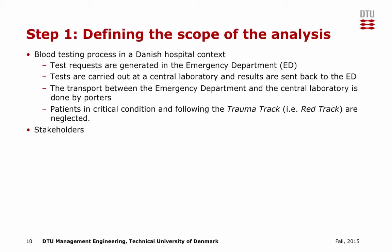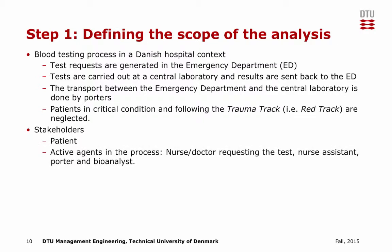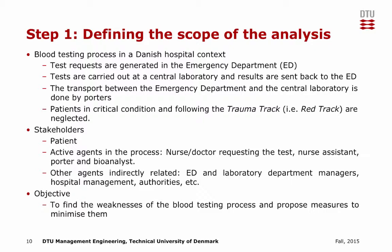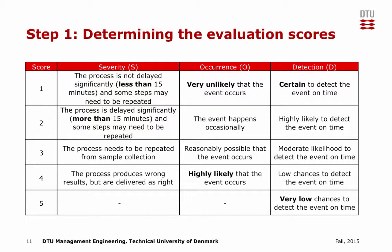The main stakeholders of the process are the patient from which the blood is drawn; active agents in the process, that is, the nurse, the doctor requesting the test, the nurse assistant, the porter, and the bioanalyst; and also other agents indirectly related, such as the emergency and laboratory department managers, hospital management, and authorities. The objective is to find weaknesses of the blood testing process and to propose measures to minimize them. As part of the first step, the severity, occurrence, and detection scoring scales should be determined.